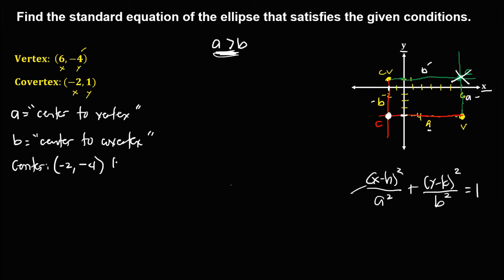From the center, h is negative 2 and k is negative 4. To solve for a, which is the distance from center to vertex, we use the counting method — starting to count on the next point. Counting from center to vertex gives us 8, so a equals 8. Then to solve for b, which is the distance from center to co-vertex, using the counting method gives us 5, so b equals 5.